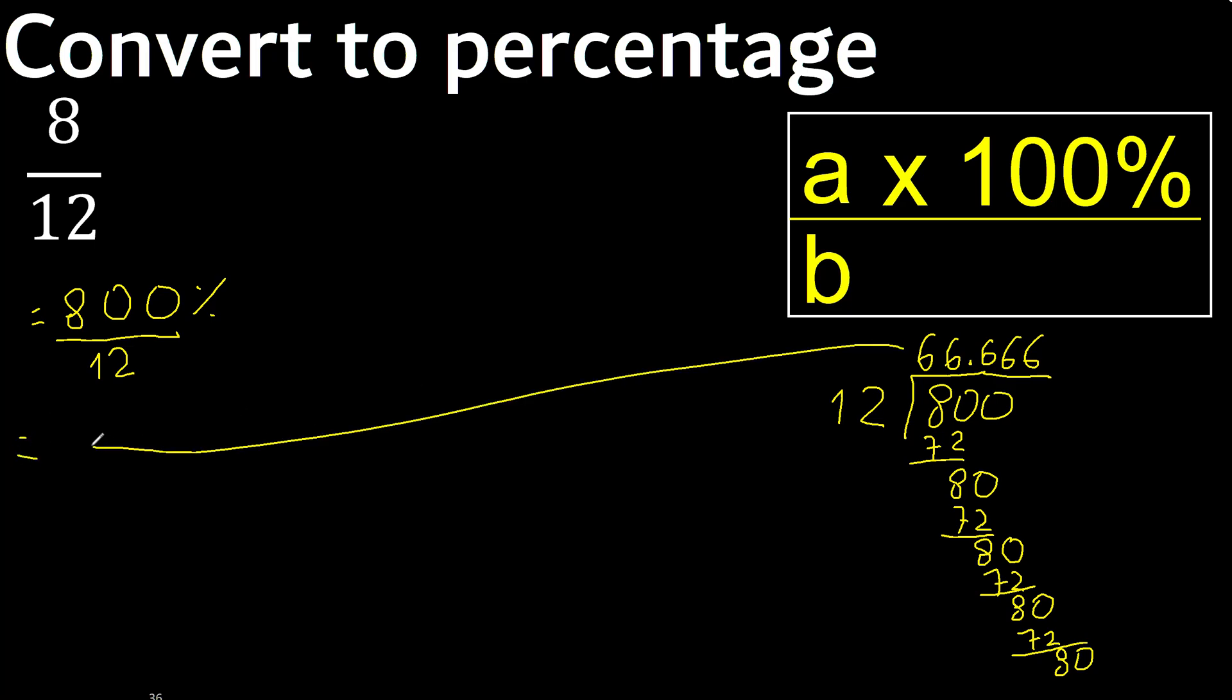Here is greater than 5, therefore here plus 1. 6 plus 1, 7. Finish.